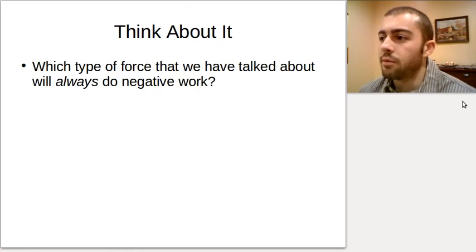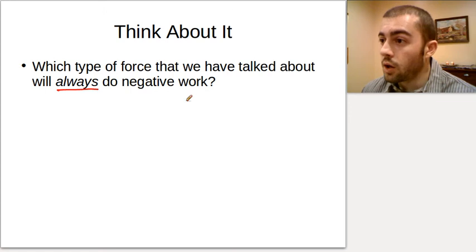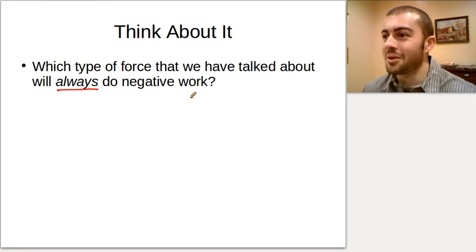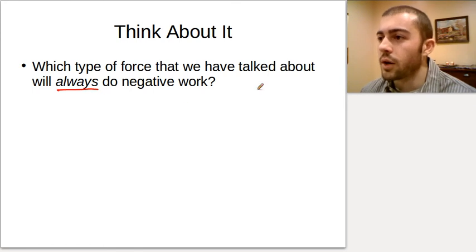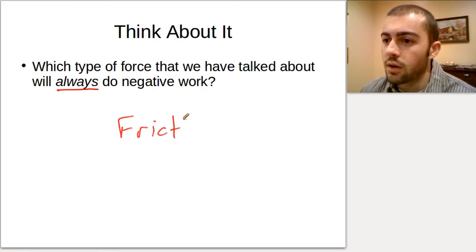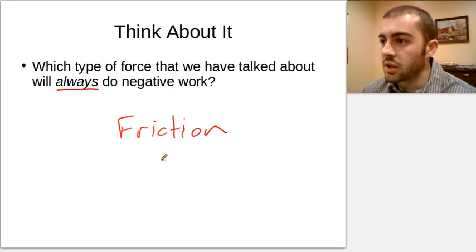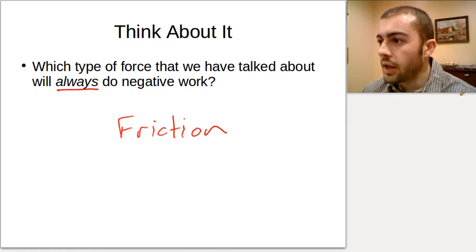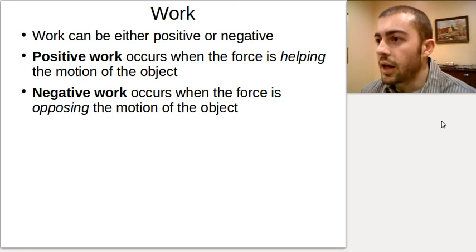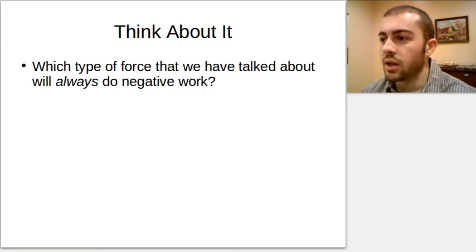Pause the video: what type of force always does negative work no matter what? We already eliminated gravity, since it can do positive work. The answer is friction — because friction always opposes motion. Since negative work always opposes the motion of the object, and friction always opposes motion, friction is going to do negative work all the time.